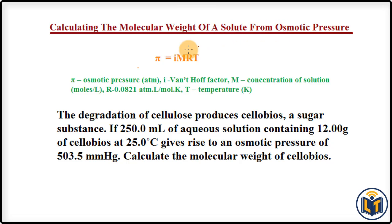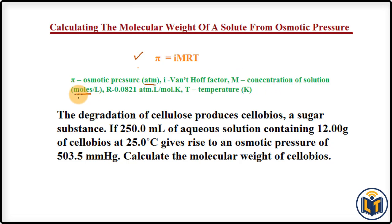The osmotic pressure formula is: π = iMRT, where π is osmotic pressure measured in ATM (atmospheric pressure), i is the van't Hoff factor, M is the concentration of the solution in moles per liter, R is the gas constant, and T is temperature measured in Kelvin.